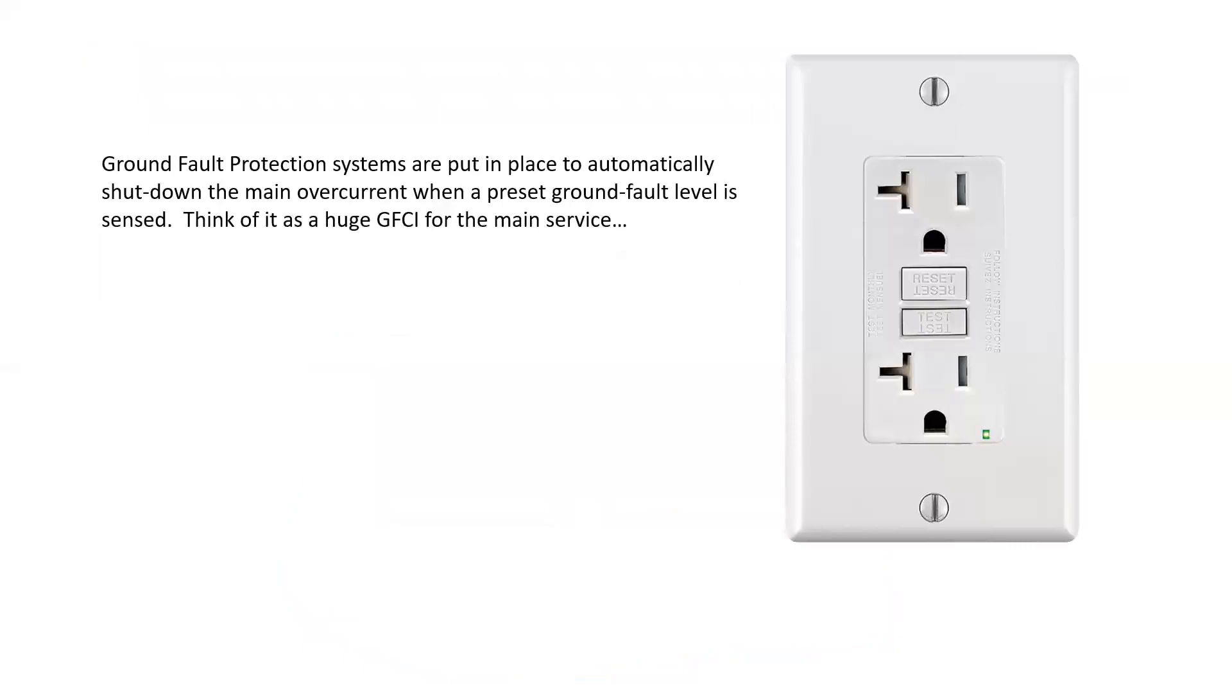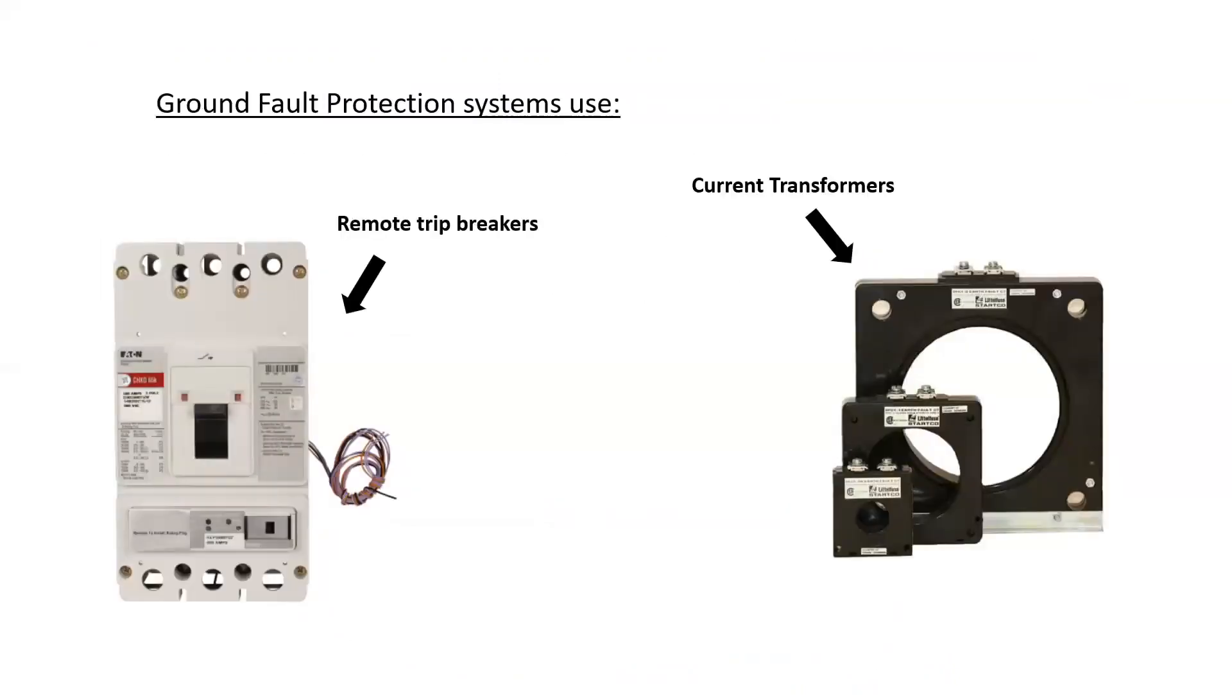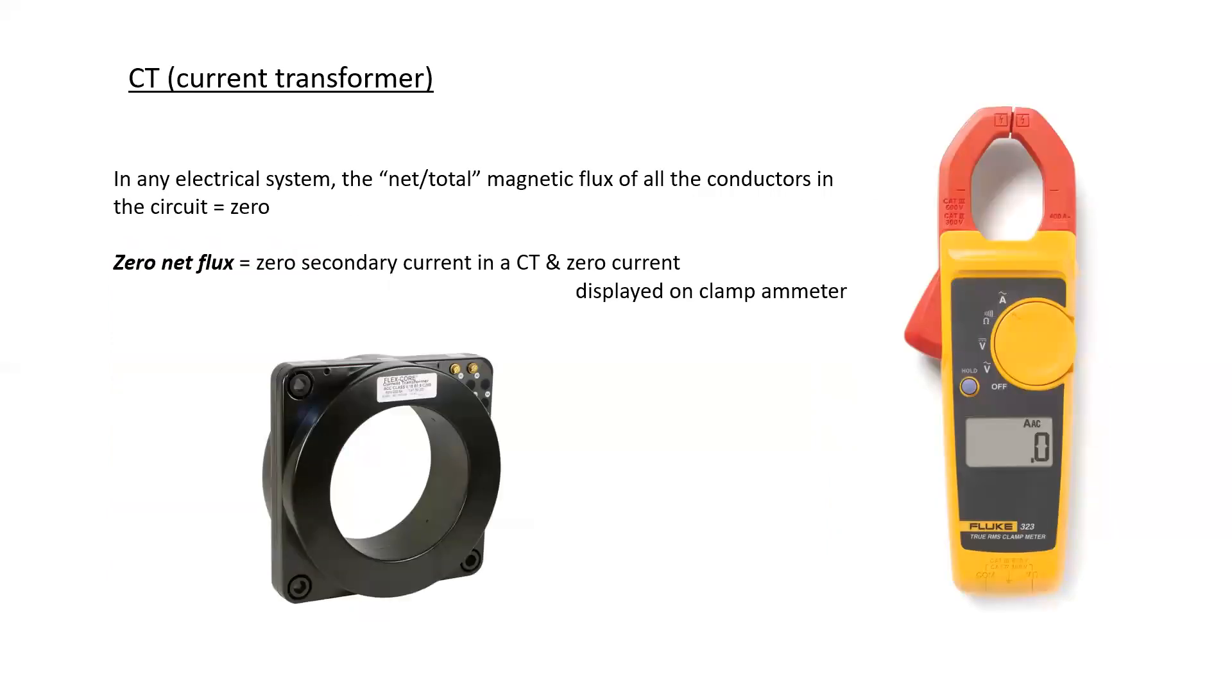Ground fault protection systems are put in place to automatically shut down the main overcurrent when a preset ground fault level is sensed. So think of it as a huge GFCI for the main service. Ground fault protection systems use remotely tripped breakers and current transformers or CTs. Often, the two items are built together in one unit.